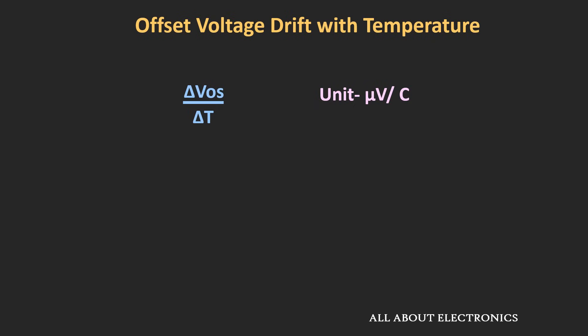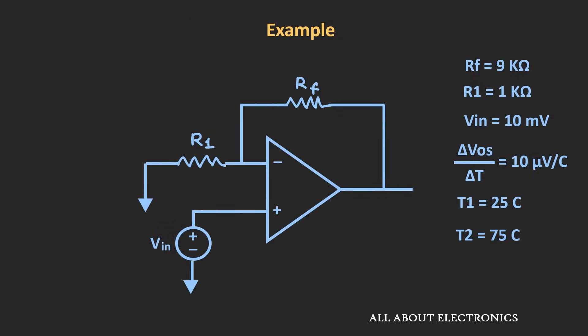Now let us see the effect of offset voltage drift with a worked example. We have a non-inverting op-amp with Rf = 9 kΩ and R1 = 1 kΩ, and the input signal at the non-inverting terminal is 10 mV. The offset voltage drift for this op-amp is 10 µV/°C. DC offset nulling is carried out at 25°C. We need to find the error in the output voltage when this circuit is operated at 75°C. First, the output voltage due to the input signal: gain = 1 + Rf/R1 = 10, so output = 10 × 10 mV = 100 mV. At 25°C, with DC offset nulling applied, there is no DC error at the output.